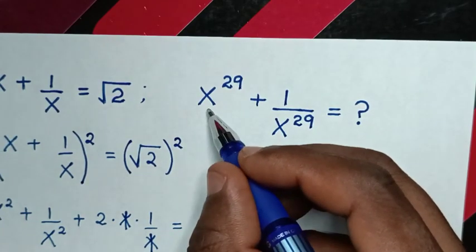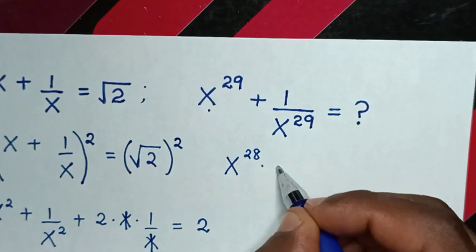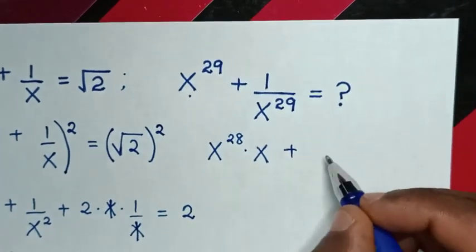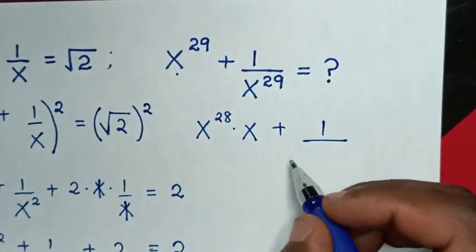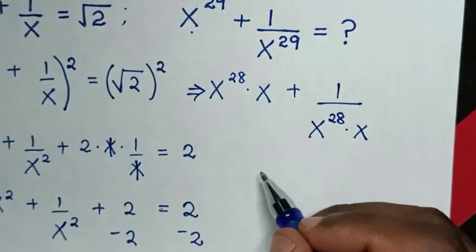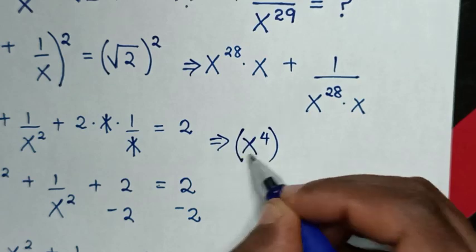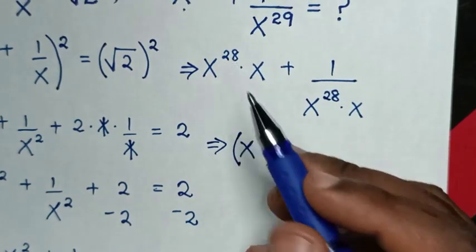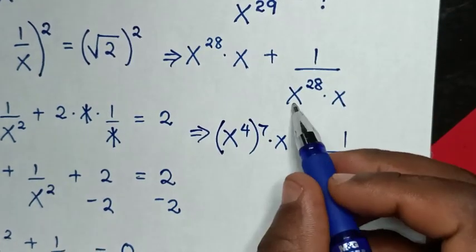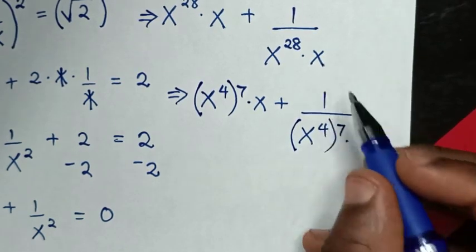So from here, x power 29 is the same as x power 28 times x, because 1 plus 28 is 29. Then plus 1 over x power 29 is 1 over x power 28 times x. Now, x power 28 is (x power 4) to the power 7, because 4 times 7 is 28. So x power 28 times x plus 1 over x power 28 times x.